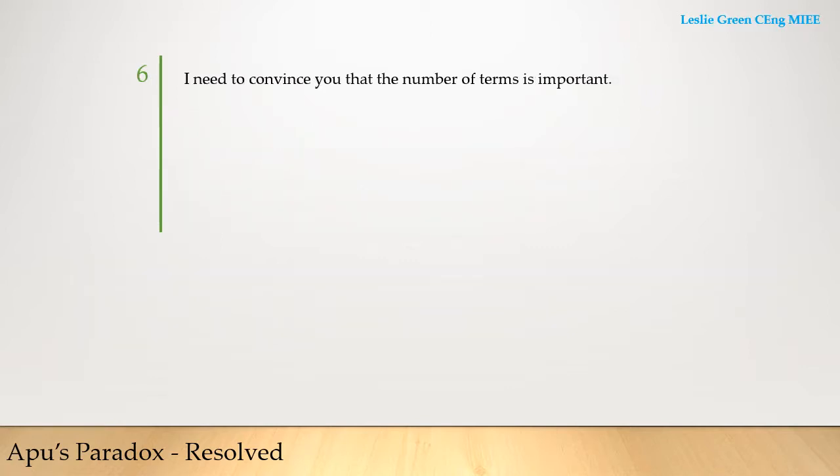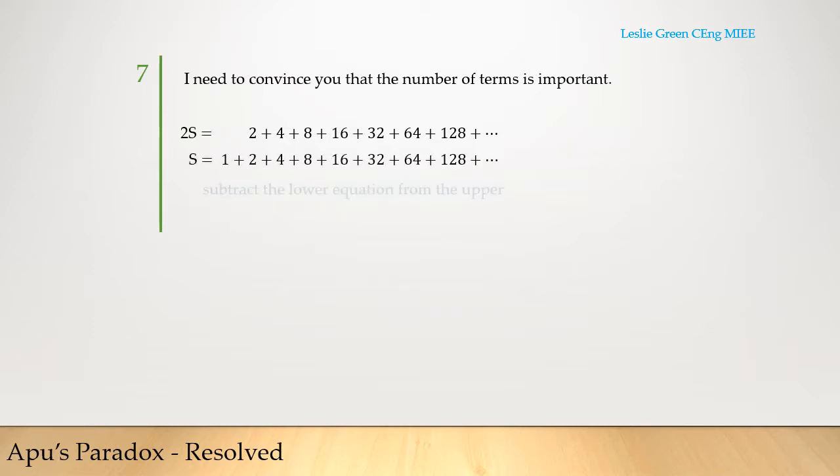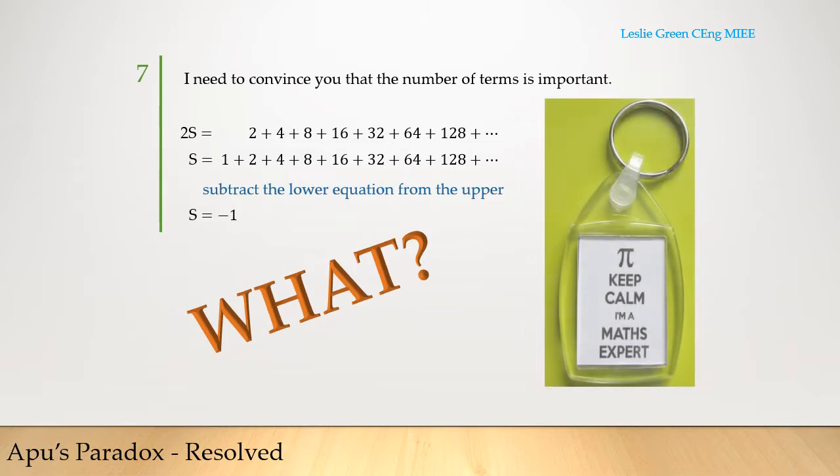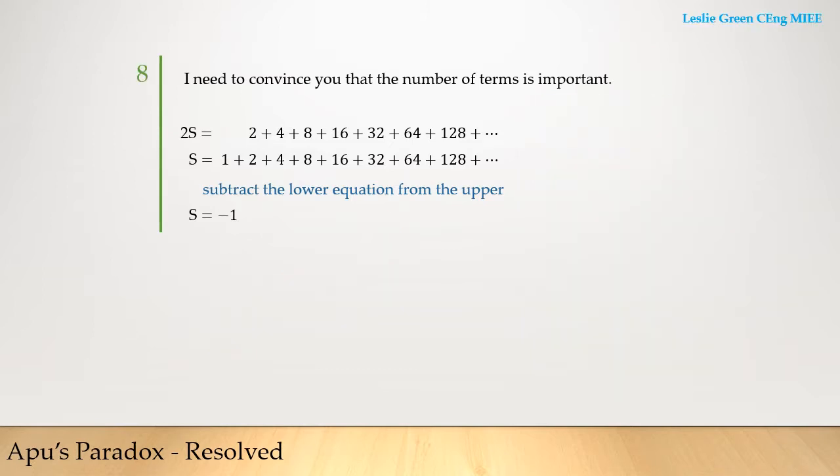Let's take a step back for a moment and consider an infinite series S, which we double to 2S. If you then subtract one from the other you get the entirely stupid result minus 1. What on earth went wrong?